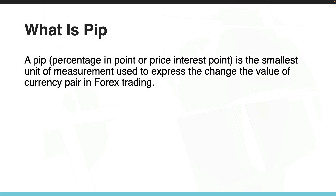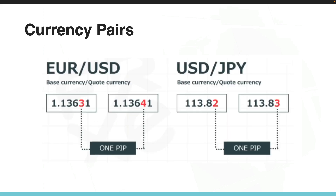Let's talk about what a pip is in forex. We often say we made or lost x amount of pips on a trade. A pip, also known as percent in point or price interest point, is the smallest unit of measurement used to express the change in the value of a currency pair in forex trading.